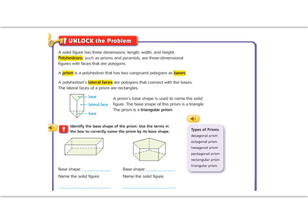Unlock the problem. A solid figure has three dimensions: length, width, and height. Polyhedrons, such as prisms and pyramids, are three-dimensional figures with faces that are polygons. So polygons we know are many-sided shapes.